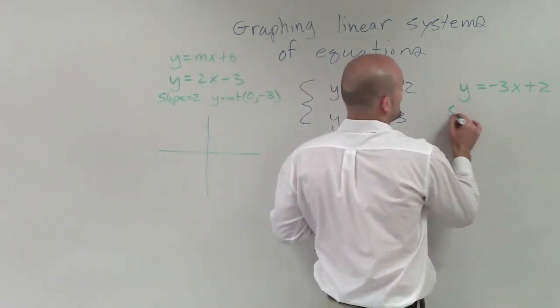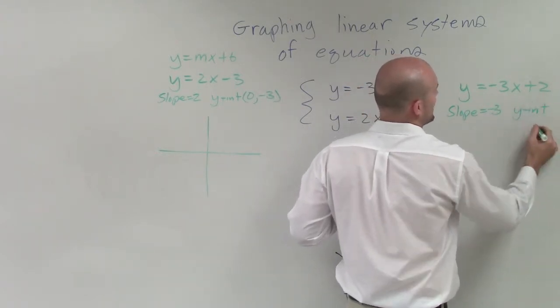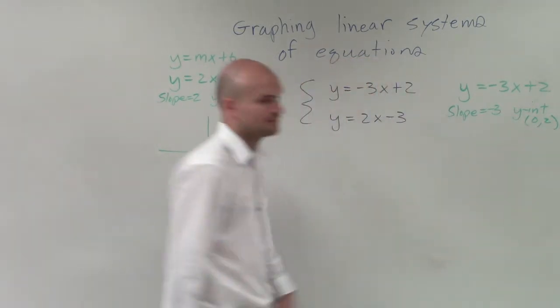So over here, I can say my slope is equal to negative 3, and my y-intercept is going to be 0, comma, 2. Alright?